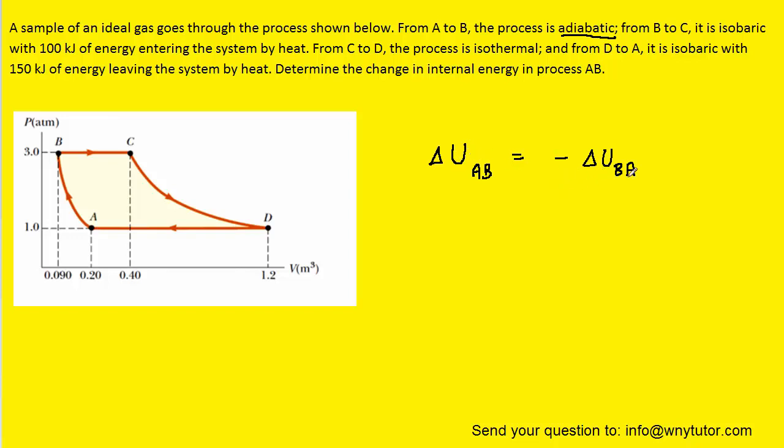So our task becomes to find the change in internal energy from B to A. Now we can go directly from B to A, or we can follow the path that would go from B to C and then from C to D and finally from D to A. And that turns out to be the path that we're going to use because we have more information regarding that path.